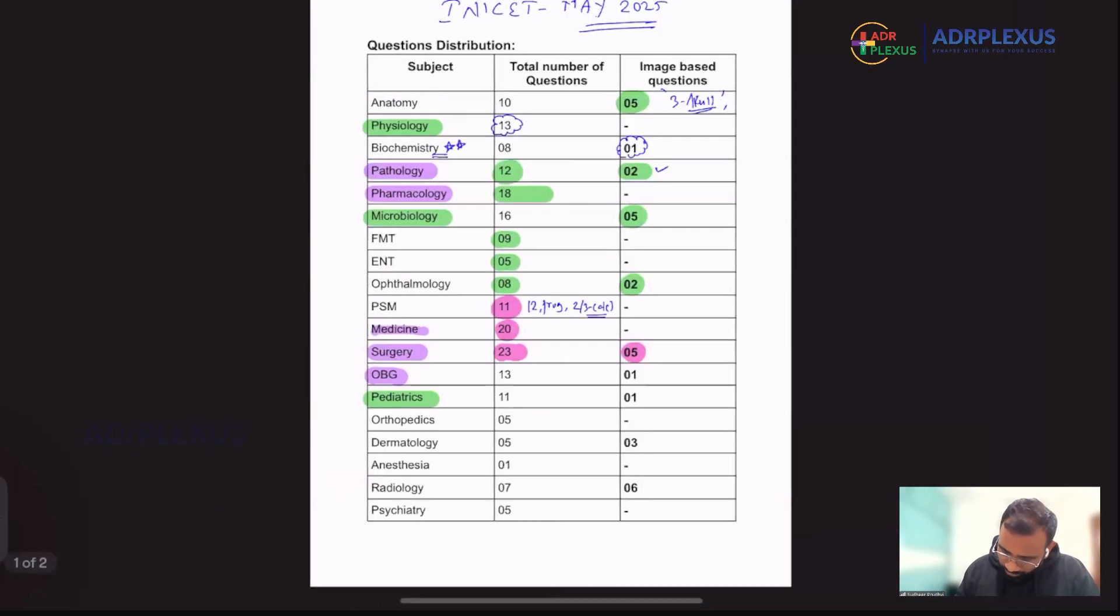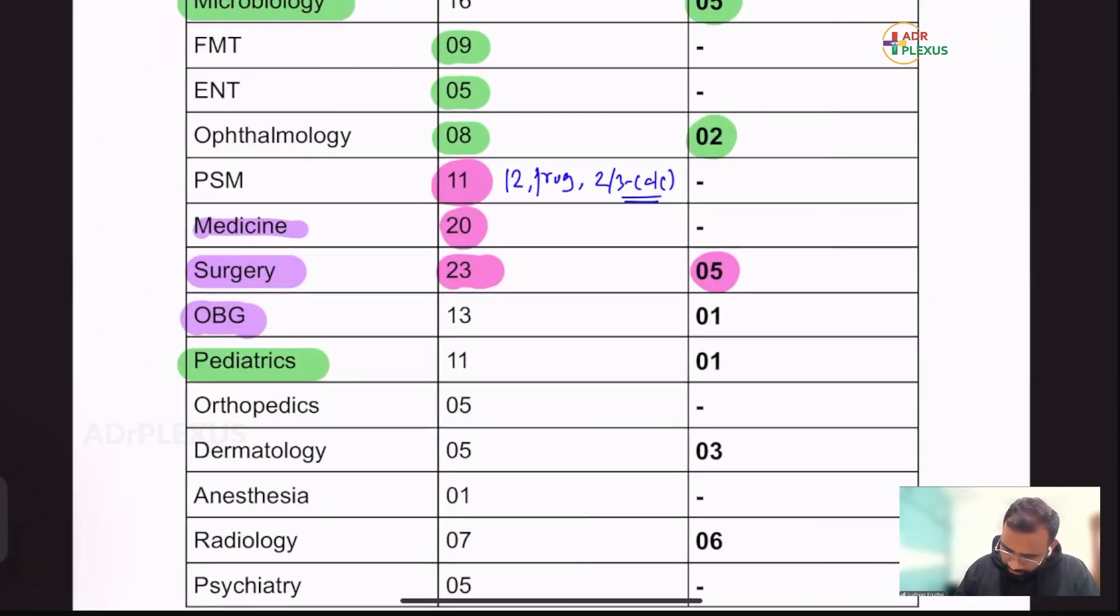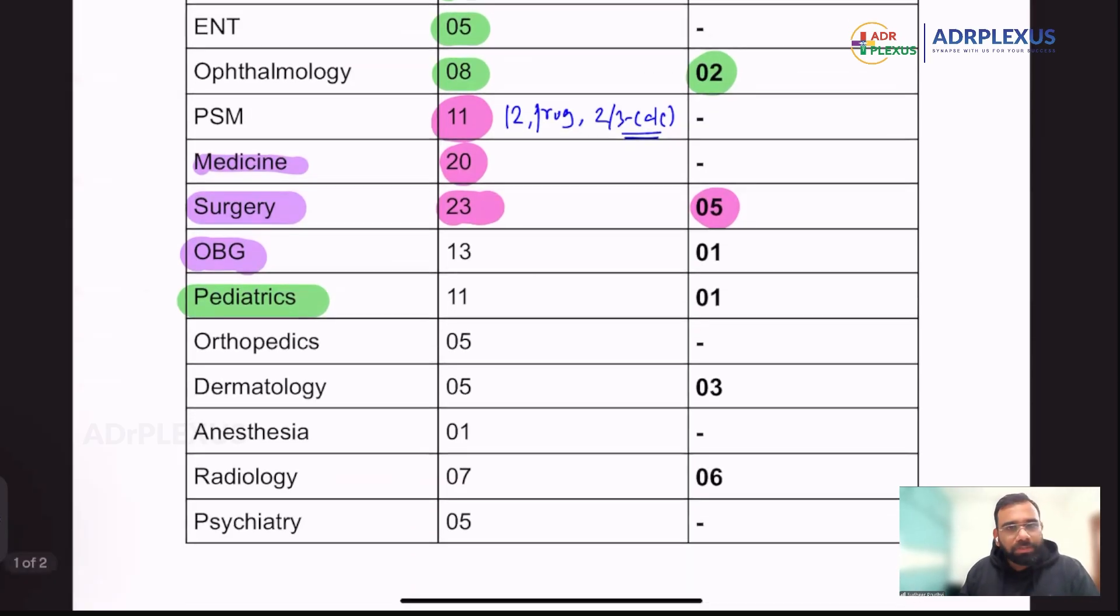I'm coming to OBG. I think in surgery, they have asked a few questions, like a couple of questions on investigation of choices, I think so, especially the ureteric stones. And they were like one question, like appendicitis, that score question was there. So few questions. And then coming to this OBG, 13 questions, including one image-based question.